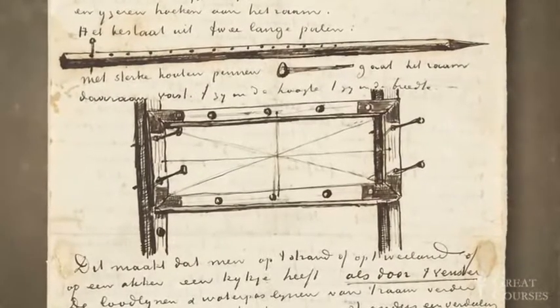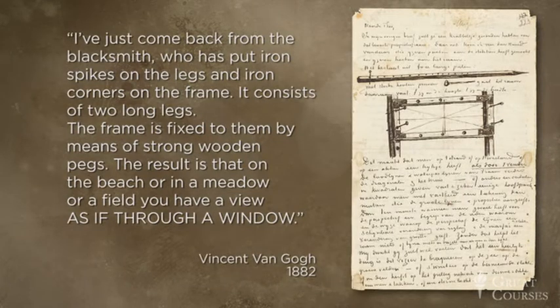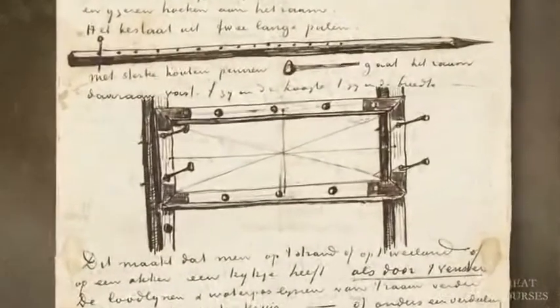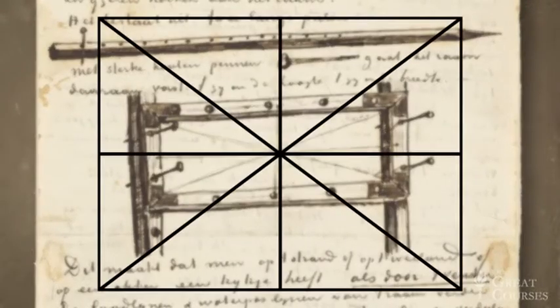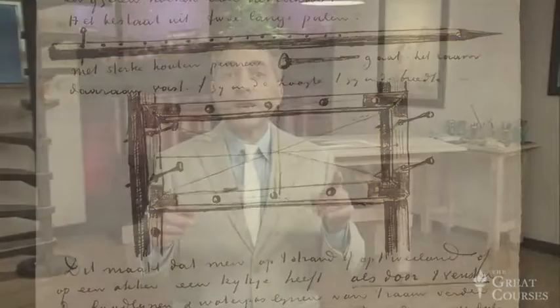Here's a sketch Van Gogh included in an August 1882 letter to his brother Theo. He wrote: 'I've just come back from the blacksmith who has put iron spikes on the legs and iron corners on the frame. It consists of two legs. The frame is fixed to them by means of strong wooden pegs. The result is that on the beach or in a meadow or a field, you have a view as if through a window.' He could string it using diagonals and cross — a simple armature — or string it as a grid, like Dürer. He goes on to say the frame and lines provide a clear guide for drawing broad outlines and proportions: 'How delightful it is to train this viewfinder on the sea, on the green fields, or in the winter on snow-covered land. With considerable and lengthy practice, it enables one to draw at lightning speed. The frame has become an excellent piece of equipment. It has cost me a pretty penny too. There's no turning back now,' he signs off.